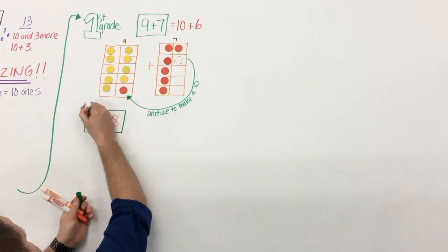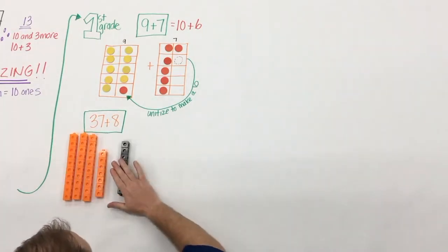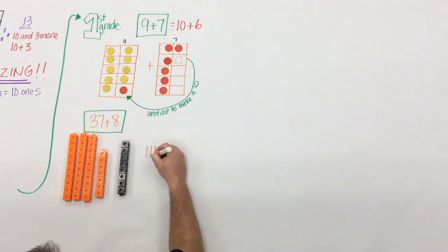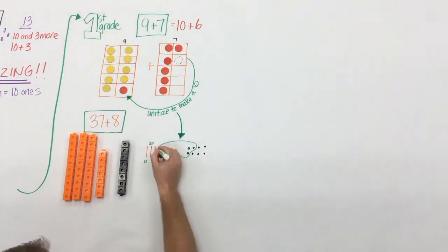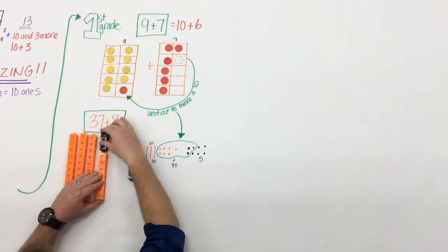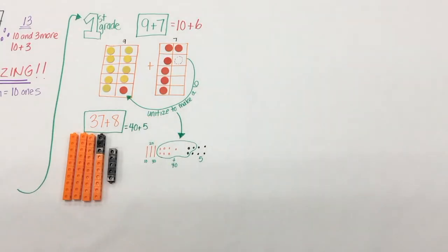Here, students are beginning to think flexibly about numbers, and the same understanding applies to double digit numbers. The big piece here is that students, as long as they're using concrete models, they're also drawing representations. So what did we do? We want to make a 10. So we're going to take our ones and bundle them up to make another 10, decompose the eight into a three and a five, give three to the 37 to make 40, and have five more.